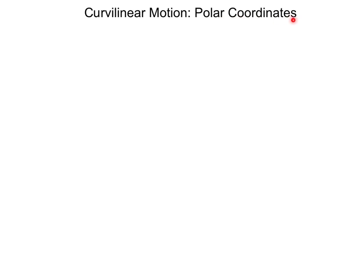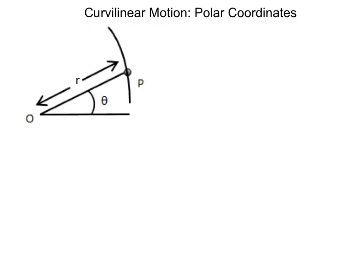Welcome to Engineering Mechanics Dynamics. This lesson is on polar coordinates, which is a new reference frame for curvilinear motion. Here's our new reference frame and the path of the particle. Instead of the normal and tangential components, we'll have our origin at a set point, with our radial component r and our transverse component theta.